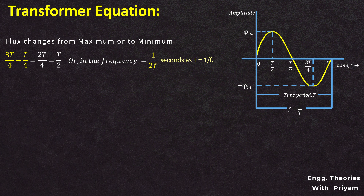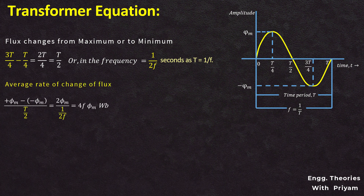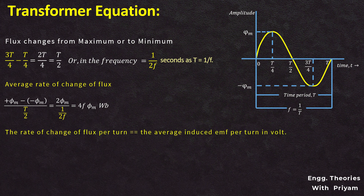So this flux changes from plus φm to minus φm in half the time period. The average rate of change of flux equals (plus φm minus minus φm) divided by T/2, which equals 2φm divided by 1/(2F), which equals 4Fφm Weber. The rate of change of flux per turn equals the average induced EMF in volts. So we can write: average induced EMF equals 4Fφm volts.